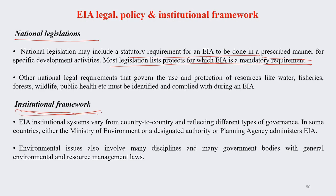The EIA institutional system varies from country to country because different countries have different types of governance. In some countries a Ministry of Environment, designated authority, or planning agency administers EIA; in others it works differently. Environment issues involve many disciplines — science, engineering, arts — it is a pure interdisciplinary field. Many government bodies with general environmental and resource management laws are also involved in EIA.